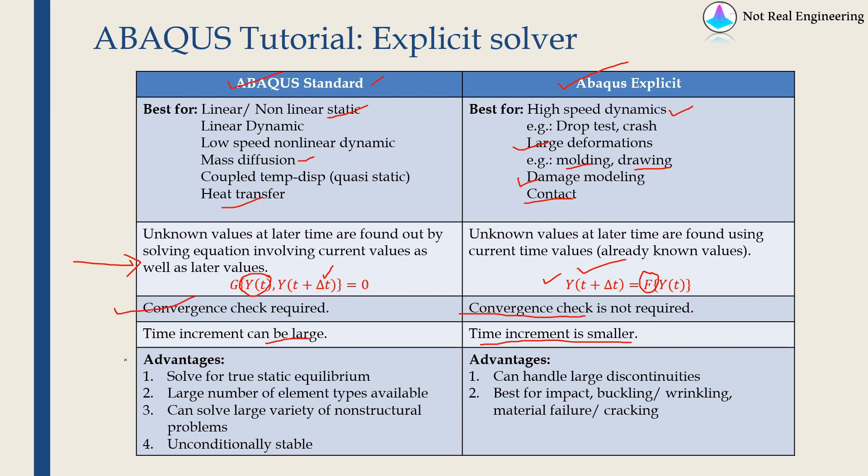And if you see advantages of Abaqus standard: first of all, it can solve true static equilibrium. In Abaqus explicit, we always have to have dynamic analysis. We can't do true static analysis. There are ways to get static solution using dynamic analysis, but it will not be the true static analysis.